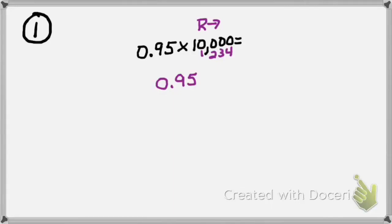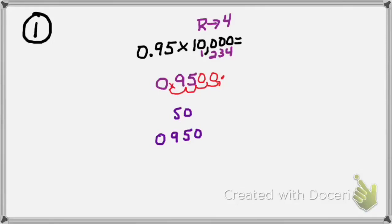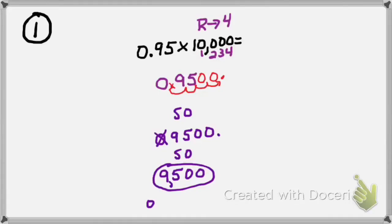Let's count the zeros in 10,000: 1, 2, 3, 4. So I'm going to move my decimal to the right four places. I go down to the number I just rewrote, cross out my decimal, and move it to the right: 1, 2 — then I add a place value zero to move it 3, and another place value zero to move it 4. So I've moved my decimal four places, giving me 09500. Removing the unnecessary leading zero, my answer is 9,500. Or I can write it as 9,500 with a decimal at the end — that's optional.